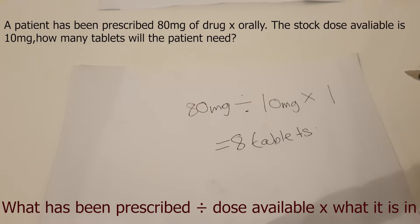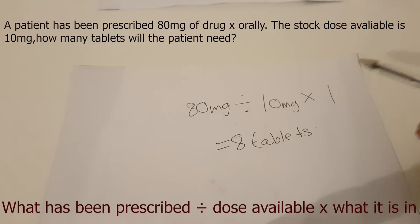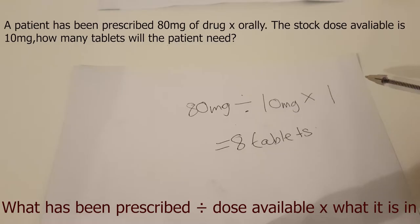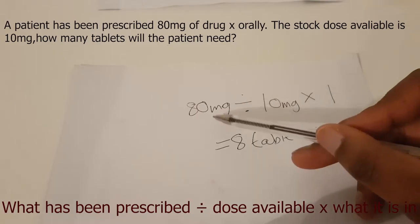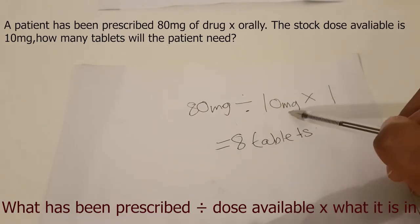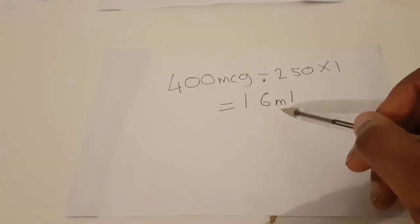What has been prescribed divided by the dose available multiplied by what it is in. So we know the patient had been prescribed 80 milligrams, divided by the dose available — 10 milligrams — and we assume it is 10 milligrams per tablet, so we multiply that by one. The answer is 80 divided by 10 multiplied by one, which gives us eight tablets.